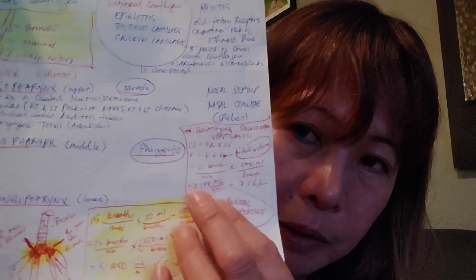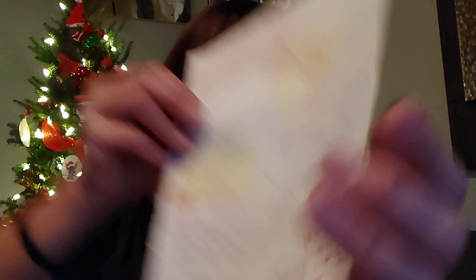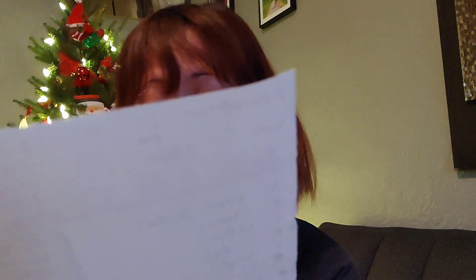I also want to mention quantifying pulmonary ventilation. Similar to cardiac output — which equals heart rate times stroke volume — we have minute ventilation, which equals tidal volume times respiratory frequency. This tells us how much breathing occurs per minute, roughly 15 breaths per minute, and I did that calculation for ventilation.